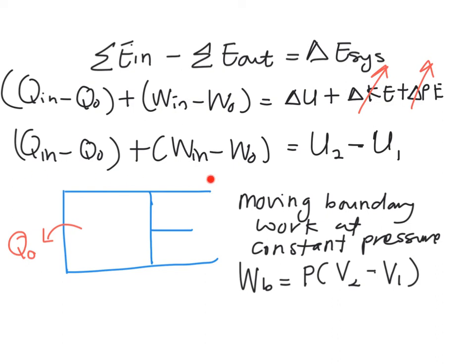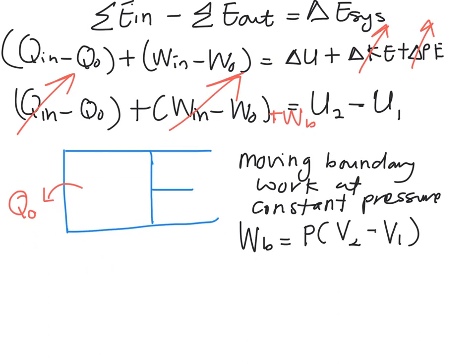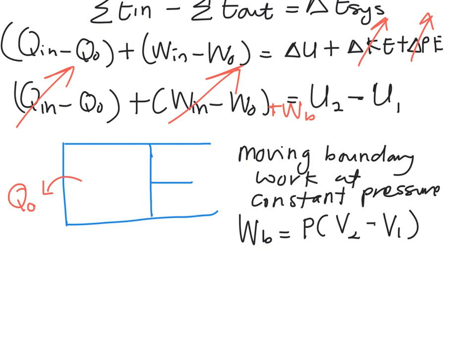If you take an example in the case of moving boundary work at constant pressure, your work boundary will be constant pressure times final volume minus your initial volume. So what will happen to your general equation of your first law is that you are going to cancel out your Q_in. There is no work here, but definitely you are going to have your moving boundary work. So finally, the equation will become negative Q_out plus your W_B equals U_2 minus U_1.